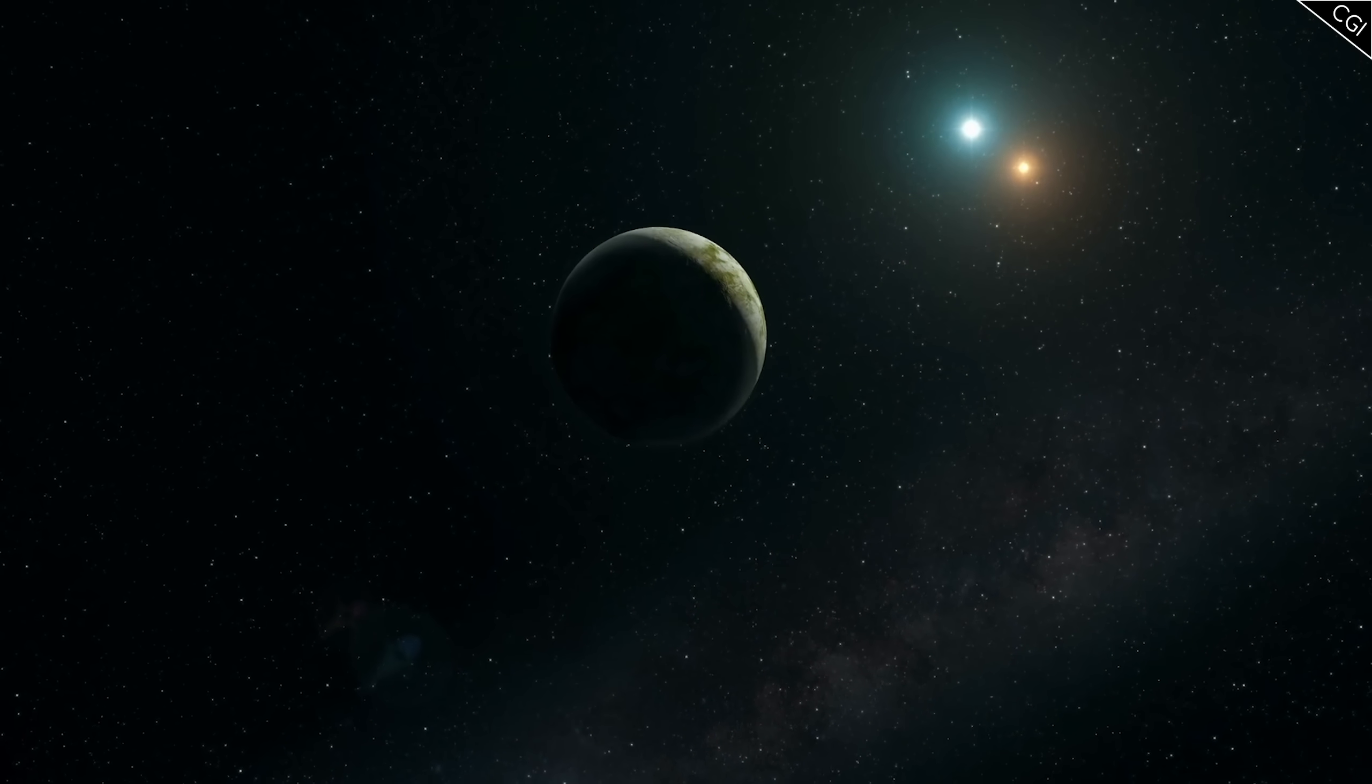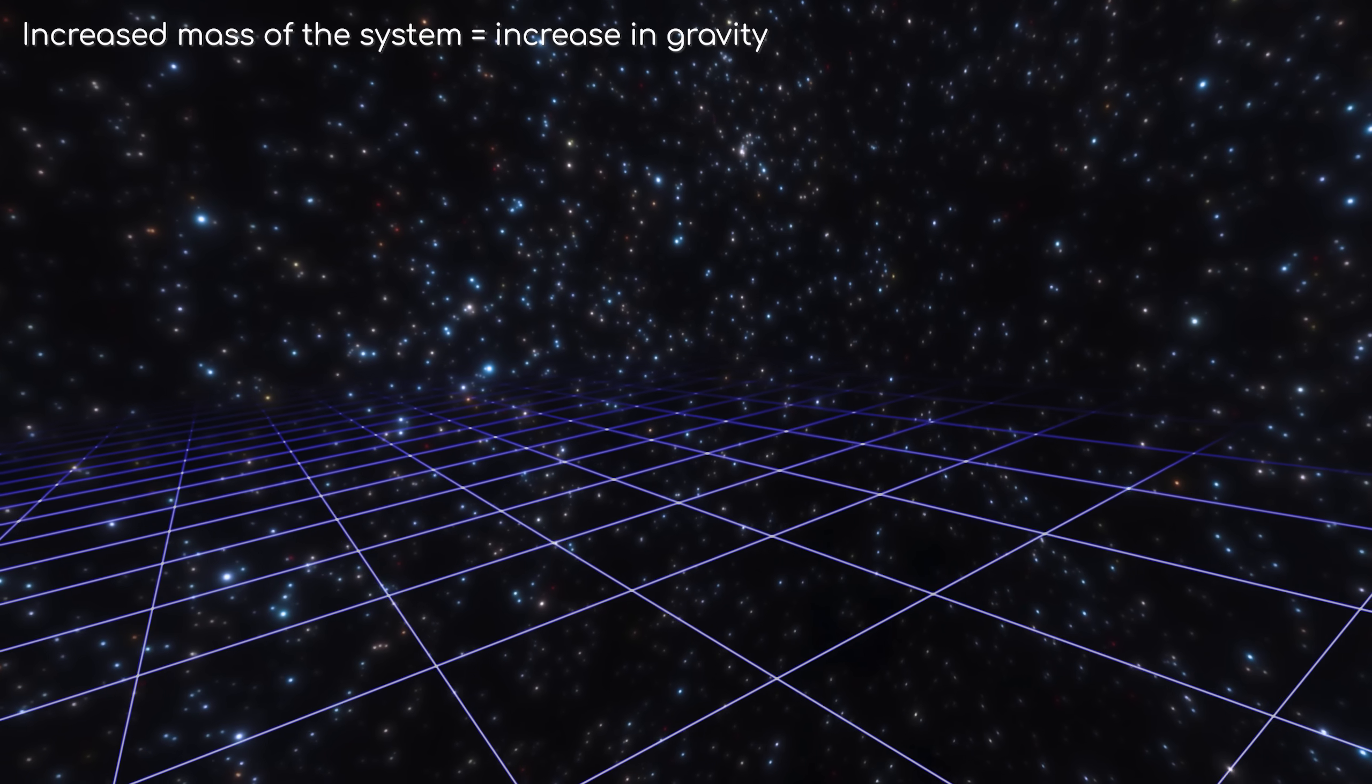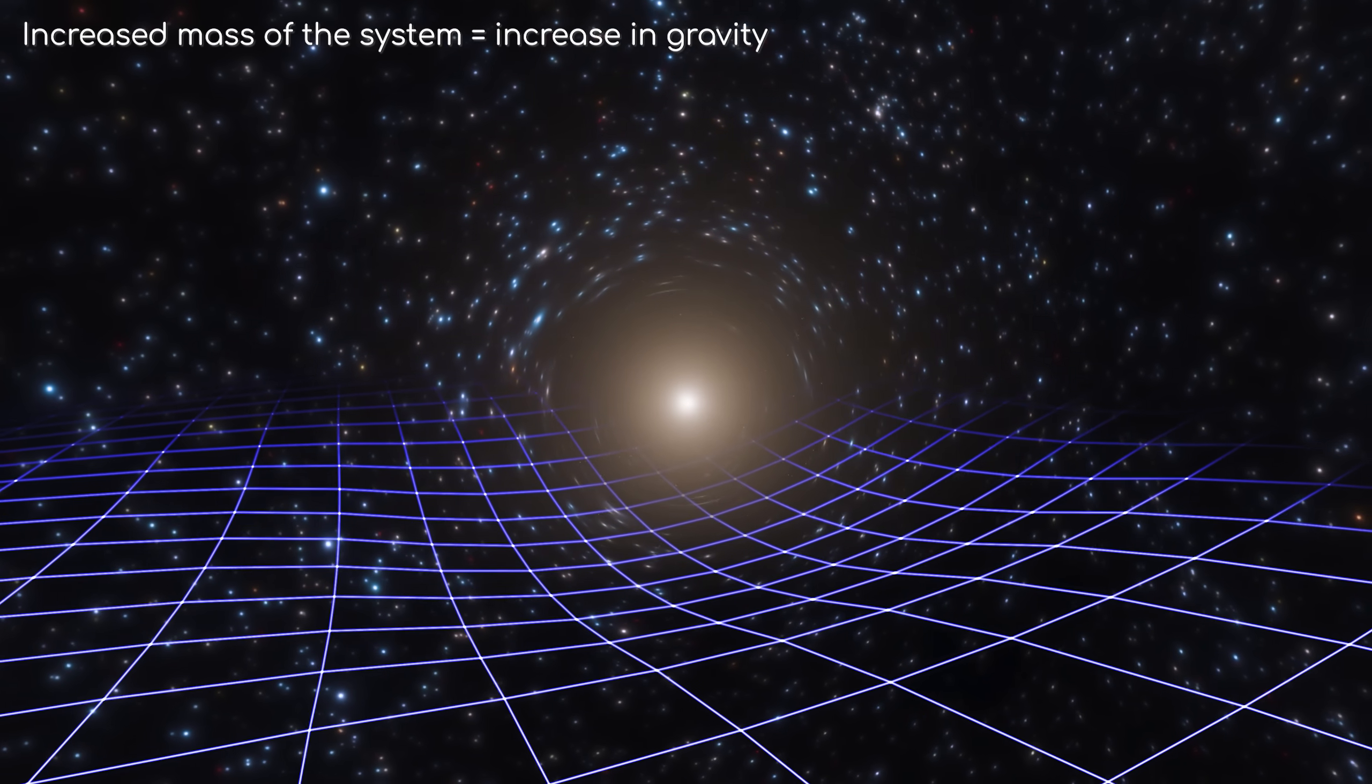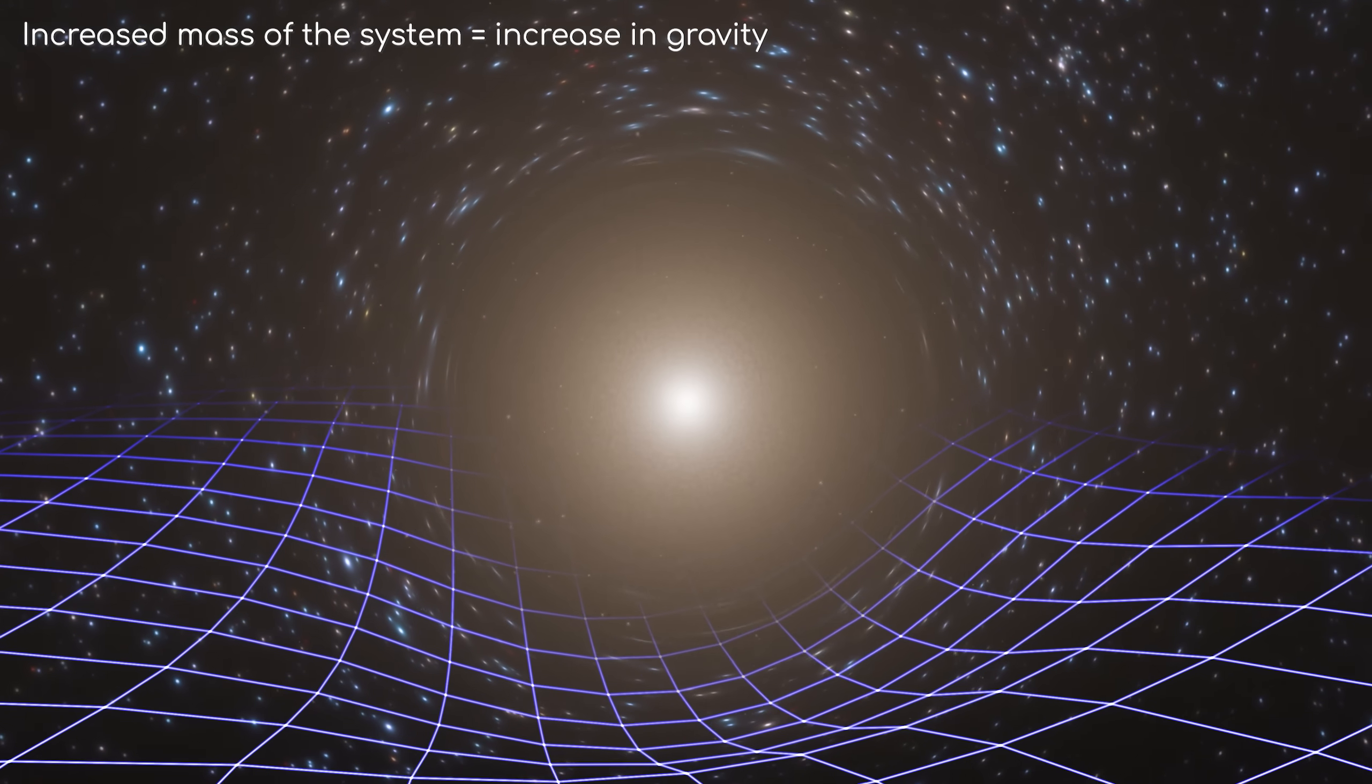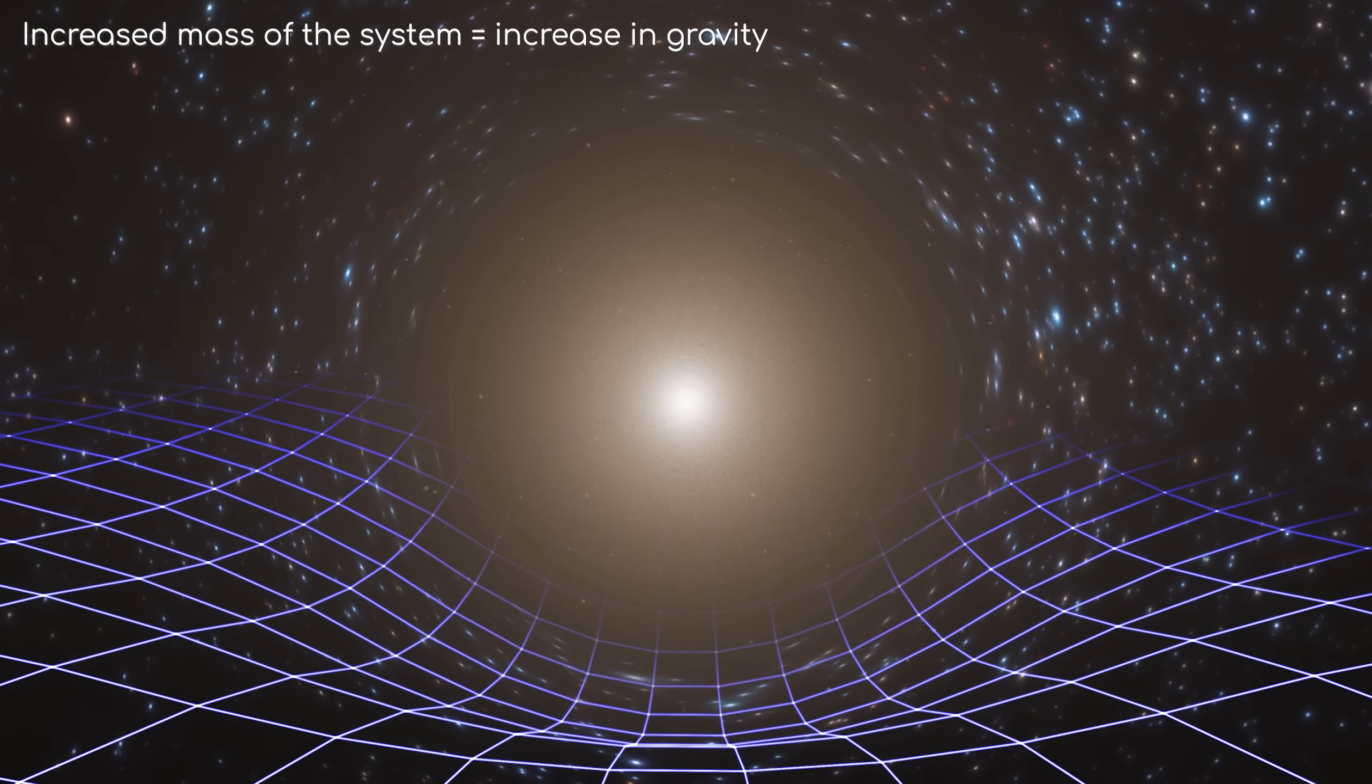Our year would be shorter if we stay one astronomical unit from the system's barycenter, because of the increase in mass and gravity of the system from the extra star, Earth's velocity would have to be faster in order to not be pulled into the stars.